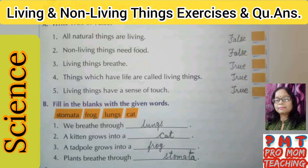Chapter 1. First question: true or false? First statement — all natural things are living. Natural things are created by nature. Examples: animals, earth, rivers, sun, moon, plants, etc. Not all of these are living. So 'all natural things are living' is false.